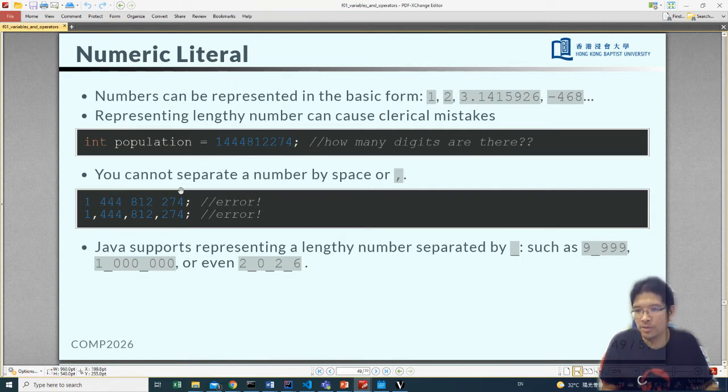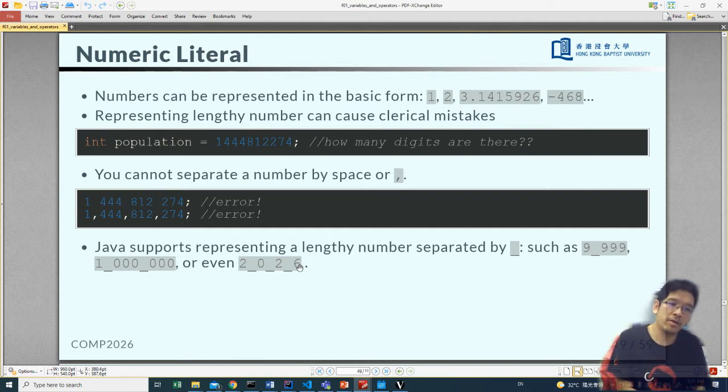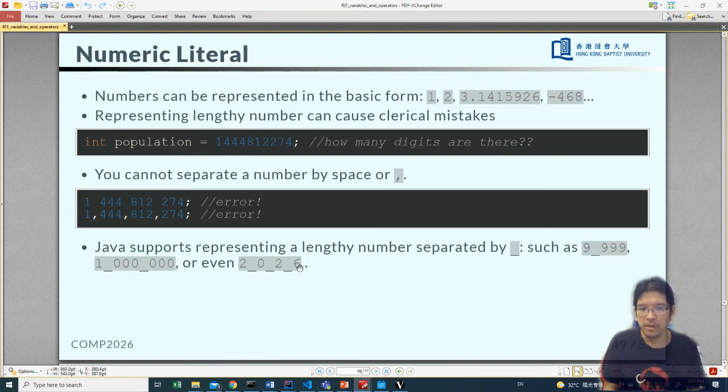But in Java you just can't do it. It will violate the syntax of Java. Java does provide you an alternative way to represent a lengthy number such that you can insert an underscore symbol between numbers. So for instance you can say 9_999 or you insert the underscore like 1_000_000 or you can even do it like 2_0_2_7. That will be totally fine. Now remember you can't put the underscore at the beginning or at the end of the number literal. Remember if you put an underscore in front of a numeric literal it actually is a variable. Don't do it.